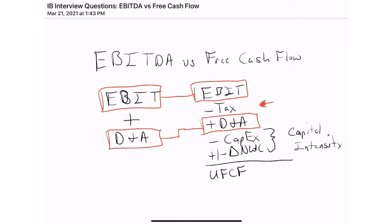The punchline here is that EBITDA is really a shorthand metric that allows us to approximate unlevered free cash flow, but what it doesn't do is take into account the capital intensity of the business — it actually neutralizes that. So you'll often see valuation metrics adjusted to reflect capital intensity, in particular CAPEX. You'll see a metric relative to EBITDA minus CAPEX as opposed to just EBITDA. That's really the big difference between these two. Hopefully this makes more sense now — if you have any questions let us know in the comments below, and please don't forget to subscribe.